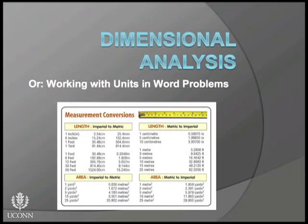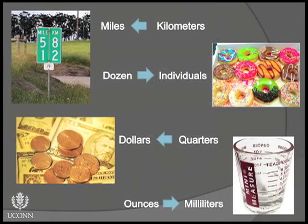Dimensional analysis is just another name for finding the relationship between values measured in different types of units. Any unit can be converted to another unit by creating a ratio between the two units. If you've ever converted a measurement taken in one unit to another, you've done dimensional analysis.